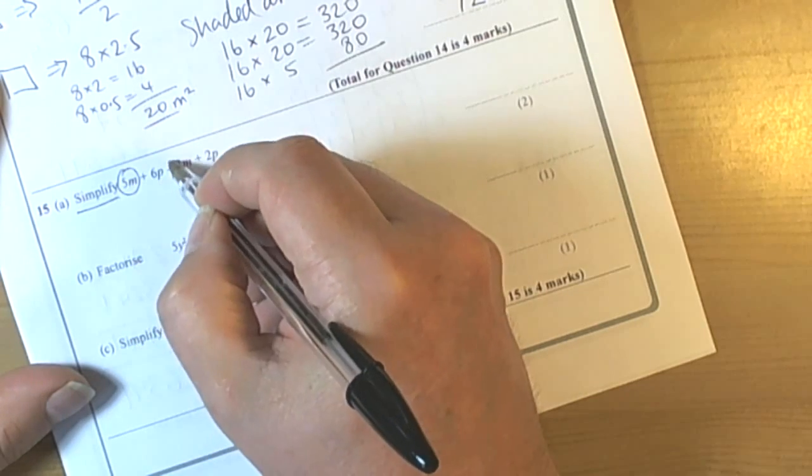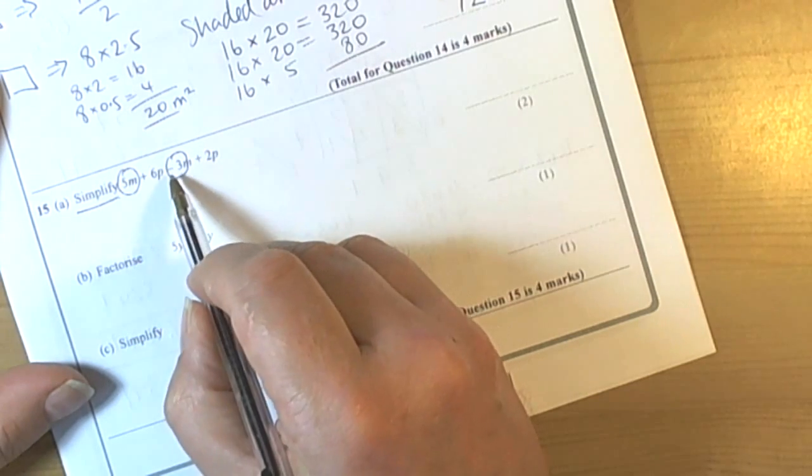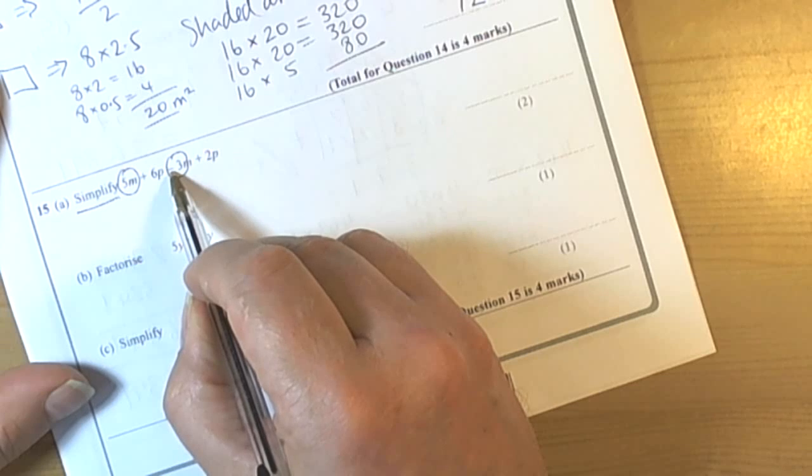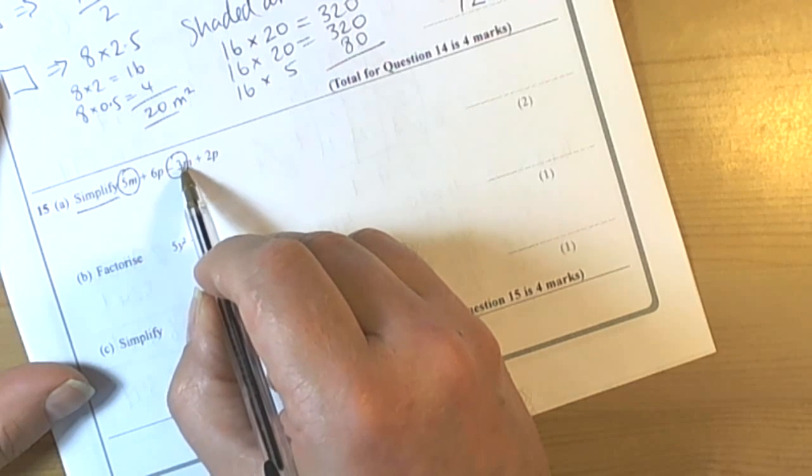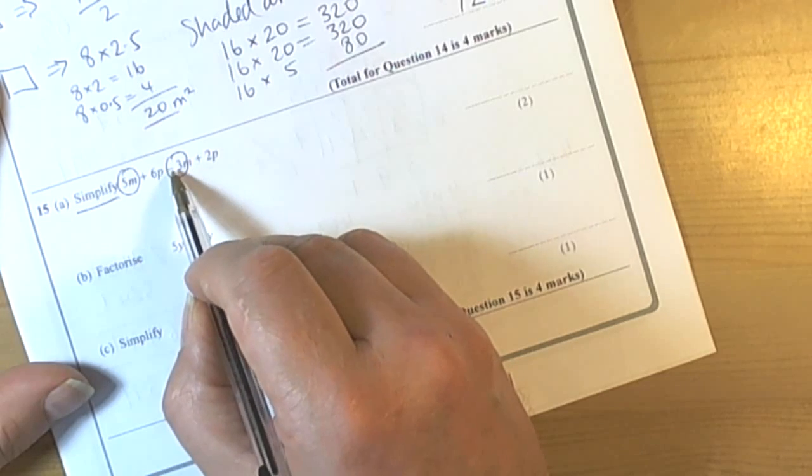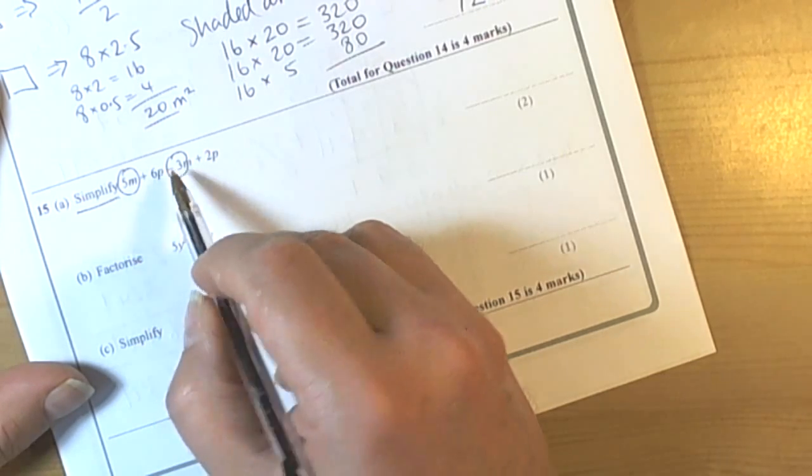Simplify means make it shorter by bringing like terms together where possible. Here we've got 5M take away 3M. Always keep the operation to the left of the term in the expression so you can see what you're doing. So we're doing 5M